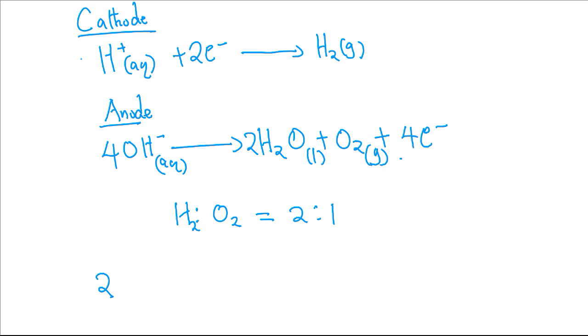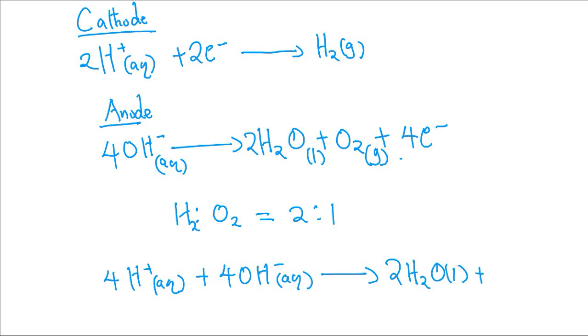When we balance, we shall have 4 hydrogen ions plus 4 hydroxyl ions giving 2 moles of water plus 2 moles of hydrogen gas plus a mole of oxygen. And that's why we are saying the mole ratio of hydrogen to oxygen is 2 to 1.